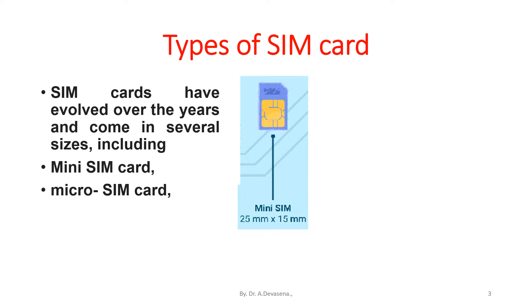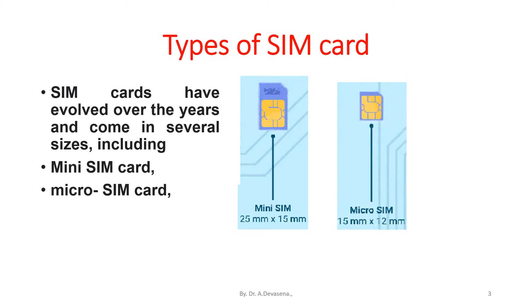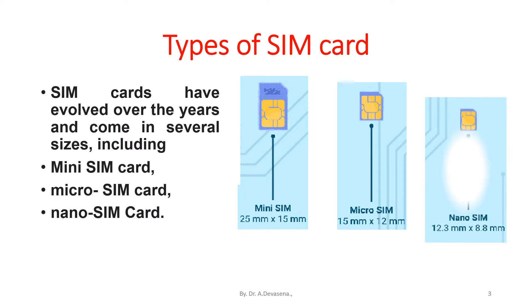The size of the mini SIM card is 25 mm x 15 mm. Then the micro SIM card — here is a representation of the micro SIM card. The size of the micro SIM card is 15 mm x 12 mm. Then we have the nano SIM card — here is a representation of the nano SIM card.